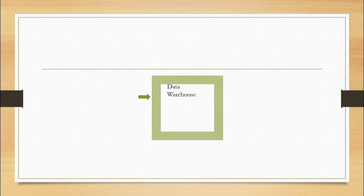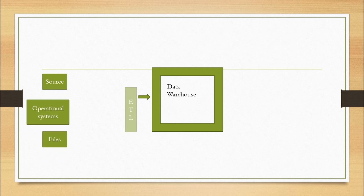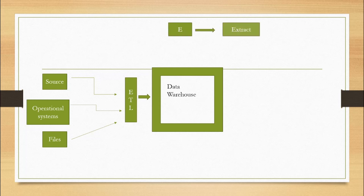The next property is integrated repository. Let's say we have a data warehouse with source data, operational system data, and files data. The source data goes into the data warehouse through the ETL process — and I will explain what ETL means. The operational systems and files also go through the ETL process and into the data warehouse. ETL: E means Extract the data from various resources.